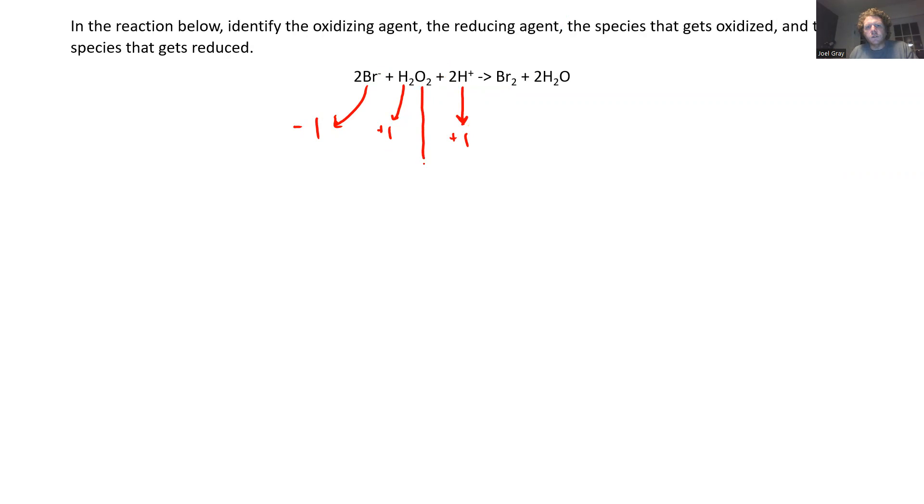Now, oxygen is almost always a minus two charge. However, there is an instance when it is not, and that is when it is in a compound known as a peroxide. This is an example of a peroxide, this is hydrogen peroxide. When oxygen is in a peroxide, it has a minus one charge, and that's each one of them. So there are two hydrogens plus two, and there are two oxygens minus two. So it gives it an overall charge of zero.